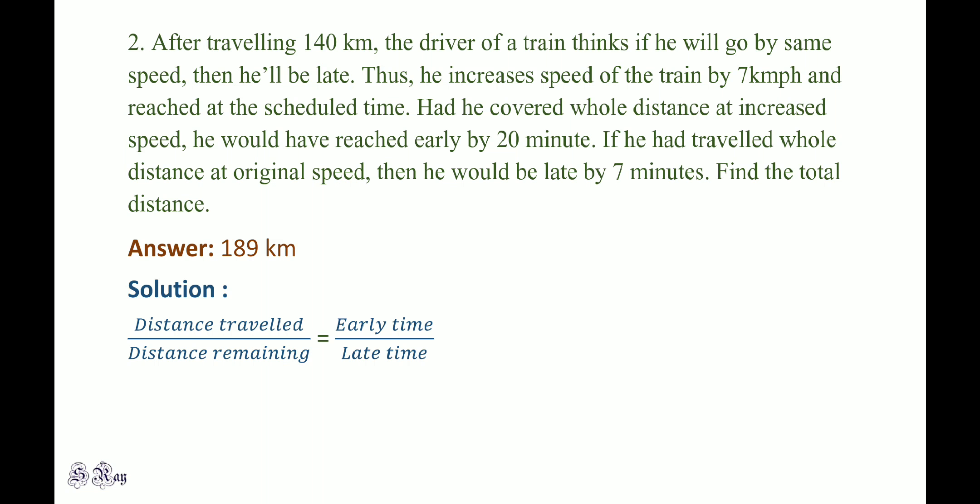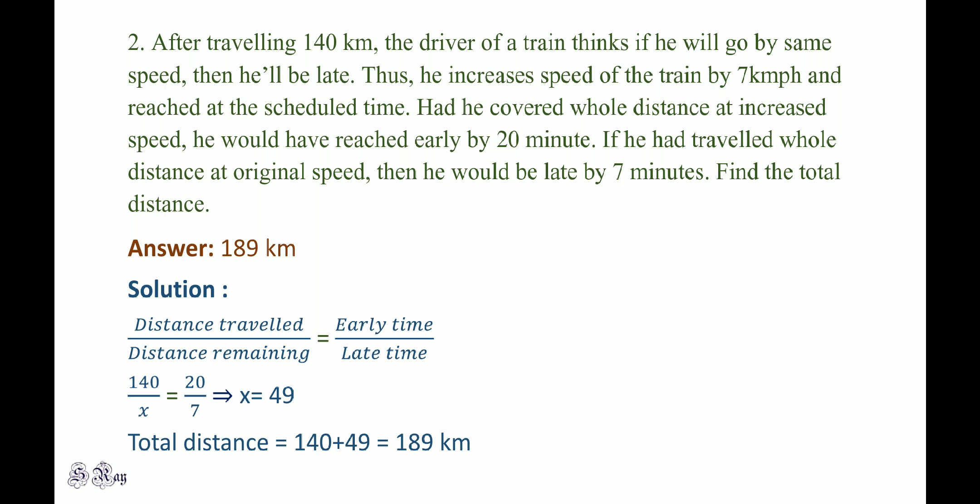The shortcut is: distance travelled divided by distance remaining equals early time divided by late time. Distance travelled is 140 km, remaining distance is X. So 140 by X equals 20 by 7, giving X equal to 49. Total distance is distance travelled plus distance remaining, which is 140 plus 49, that is 189 km.